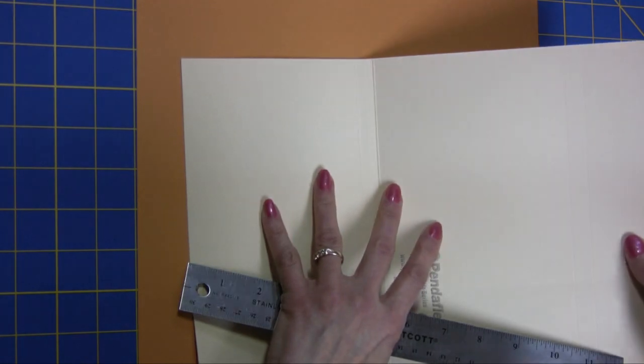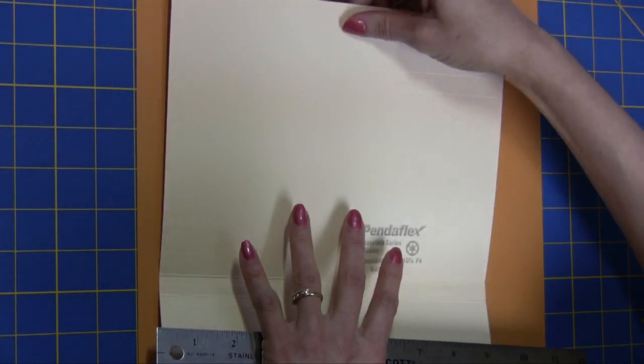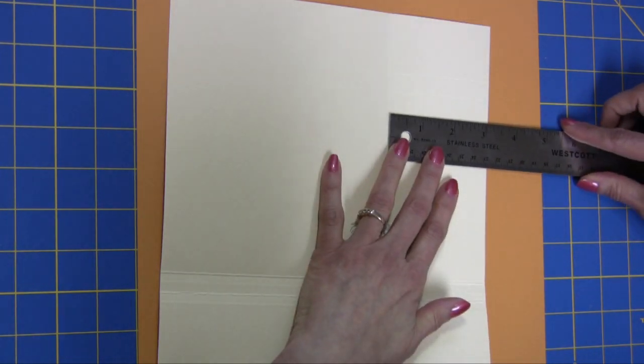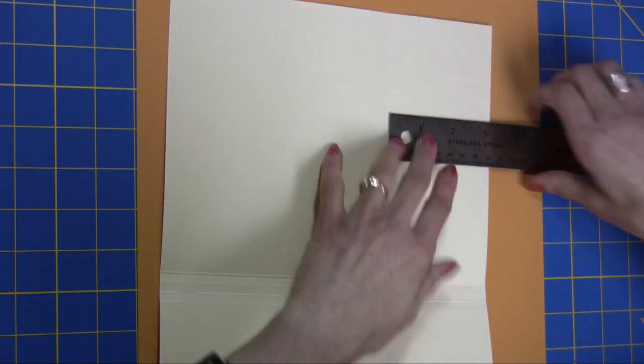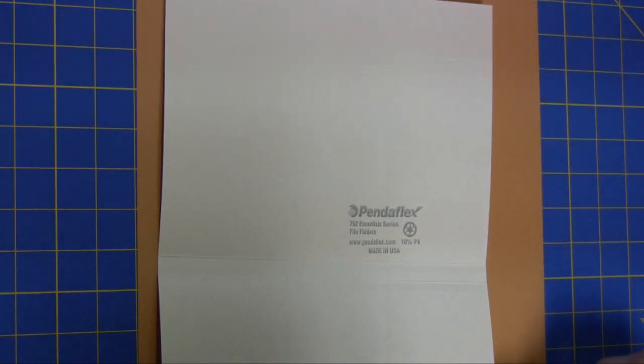I'm going to hold that up a little bit. Hopefully you'll be able to see that I've already scored that. The last score line will be at 3 1/8, so you're going to score all the way down this line at 3 1/8.